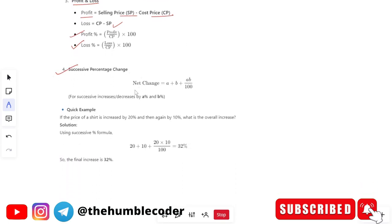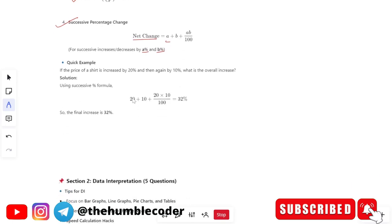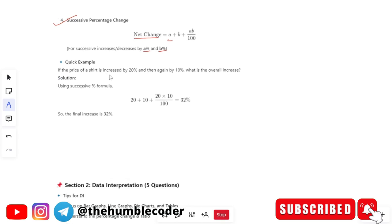Next is your successive percentage change. So if you are asked to calculate that what is your net change going to be, net change is your a plus b plus ab by hundred and for successive increases or decreases by a percent and b percent. Moving on and then there is this one example I have taken just so that you understand it in a clear way.